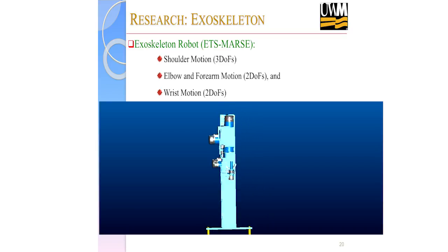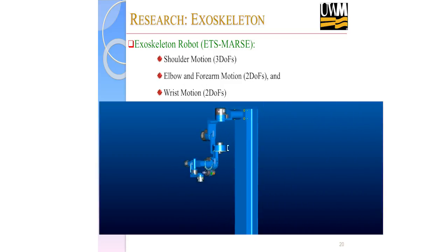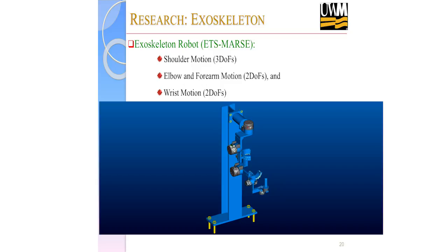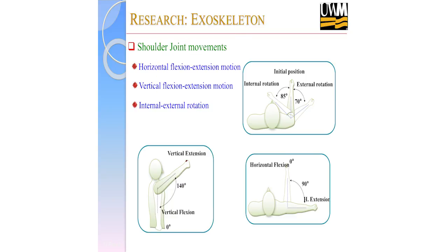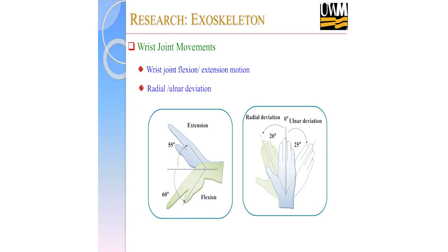This is a CAD rendering of our robot. This is a seven degree-of-freedom robot. We have a shoulder mechanism here with three degrees of freedom, a forearm component, and I'll show you some videos. We have addressed that the shoulder joint should have three degrees of freedom, and we have covered 140 degrees for vertical flexion-extension, with internal and external rotation from 75 to 85 degrees, and horizontal flexion-extension. For the forearm, we have elbow flexion-extension and forearm pronation-supination.